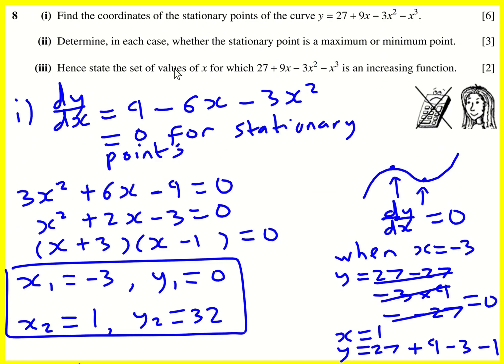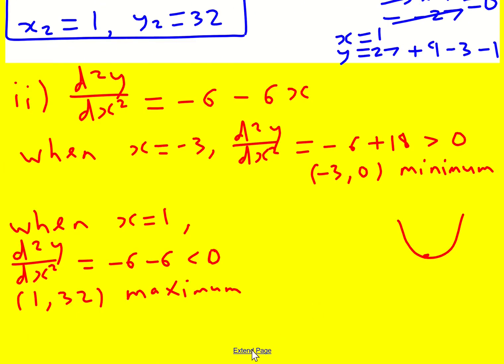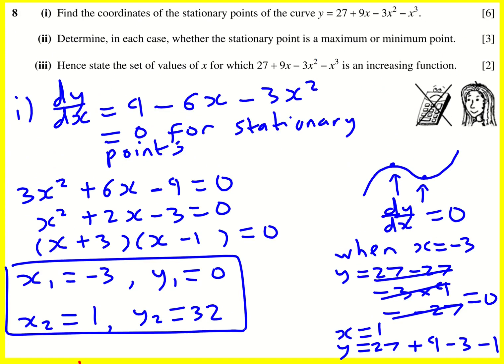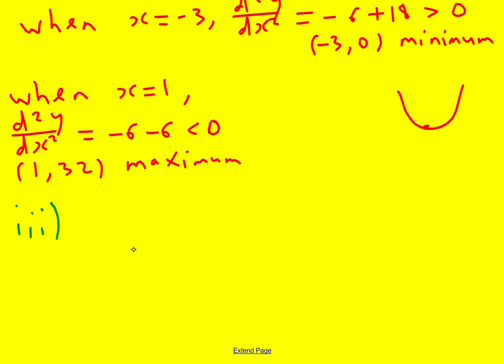Hence state the set of values of x for which this thing is an increasing function. Well, we've basically got all the information we need. I'm just going to do a little sketch. I always think it's a good idea to do a sketch. You can probably just go by the maximum and the minimum, actually. But I think it's good. It's a negative cubic. So I'm going to draw a negative cubic in there with two stationary points. Positive cubics look like this and negative cubics the other way around. And actually it is enough because for a negative cubic, you must get your minimum first and then your maximum, which is exactly what we got here.